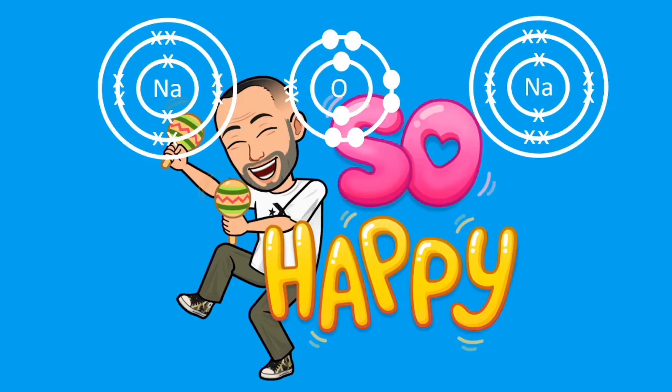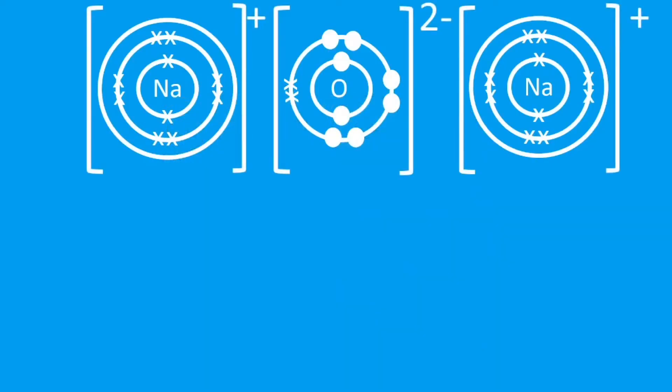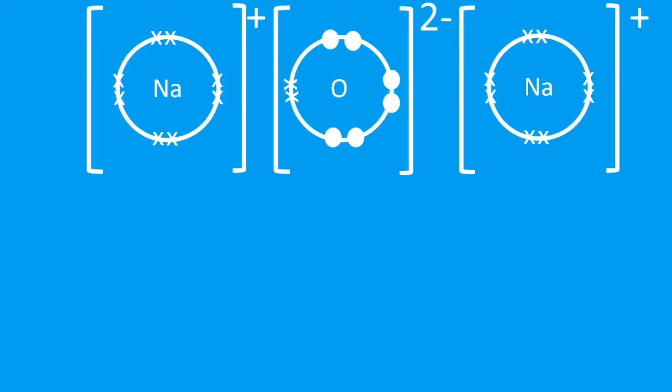That second sodium will donate its outer electron and all of a sudden everything's happy. We've got the full outer shell. We're going to tidy up by removing the empty shells and the inner shells. We're going to put square brackets and show our charges. Notice the charges here: sodium is plus one and oxygen is minus two. What we have now is our final dot and cross diagram for sodium oxide with the formula Na2O because there are two sodiums and one oxygen.